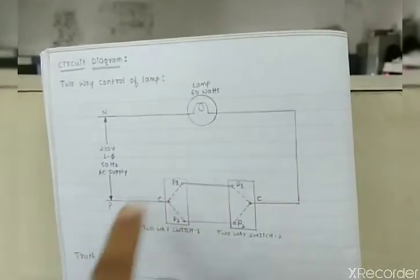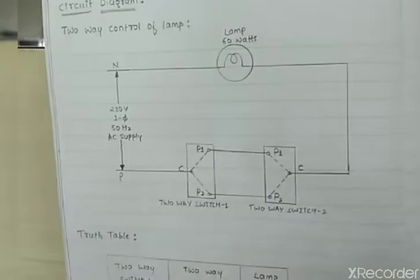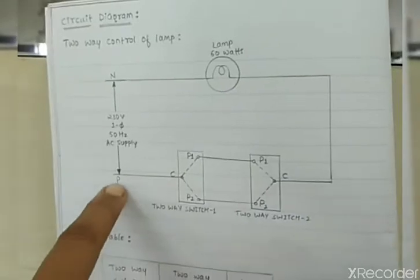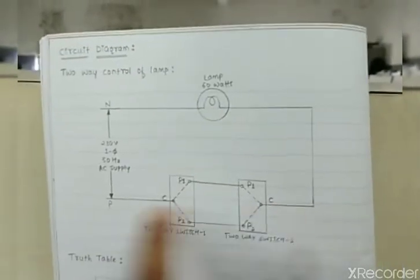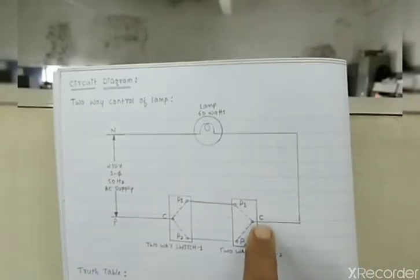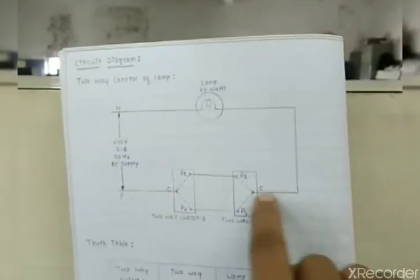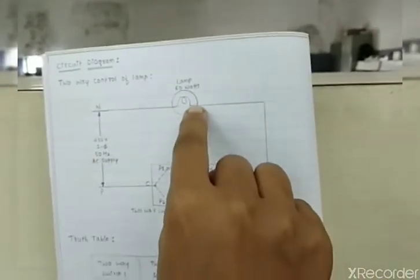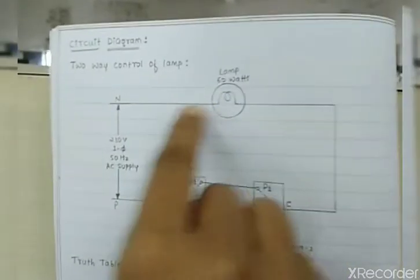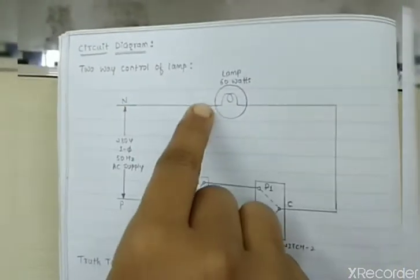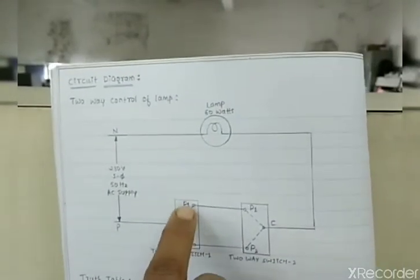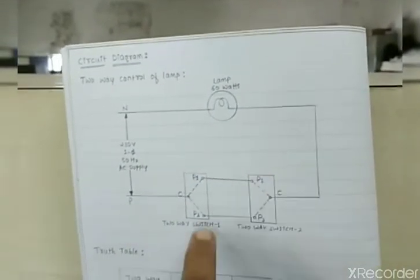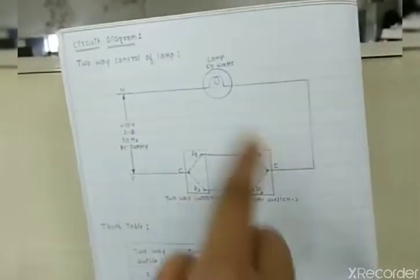Remember: all switching connections will be through the phase, not with the neutral. The phase is connected to the common terminal of switch one, and the other end is connected to the common terminal of switch two, which is then connected to the lamp. The other end of the lamp is connected to the neutral. In both switches we have P1 and P2 terminals.